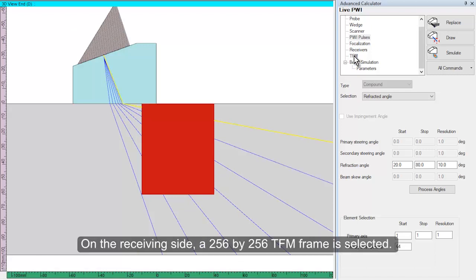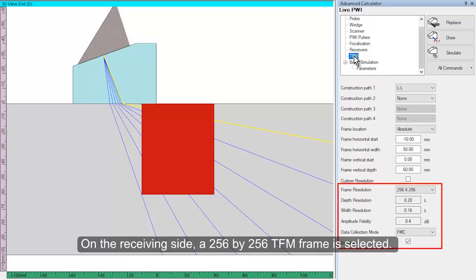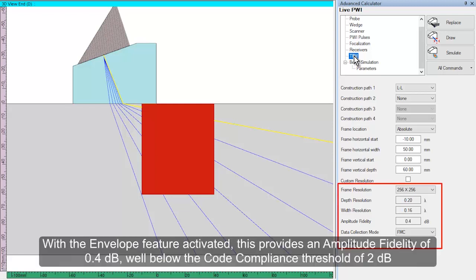On the receiving side, the 256 by 256 TFM frame is selected. With the envelope feature activated, this configuration provides an amplitude fidelity of 0.4 dB, well below the code-compliant threshold of 2 dB.